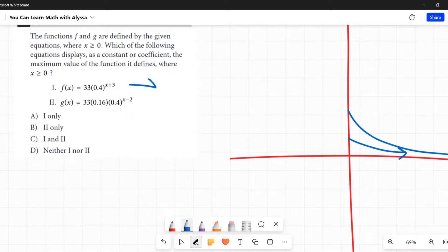First one: f(x) = 33 times 0.4 to the power of x plus 3. So when x is zero, that's just going to be 33 times 0.4 to the power of 3, right? To the power of 3. And if we do that math, if we do 0.4 to the power of 3 times 33, then we will get 2.112. All right, remember that, we're going to come back to it in a second.